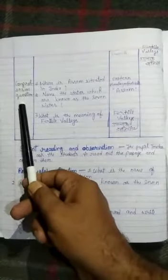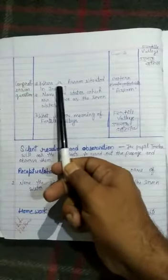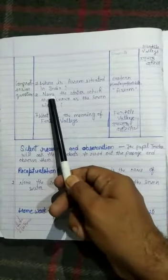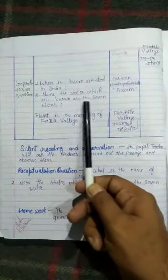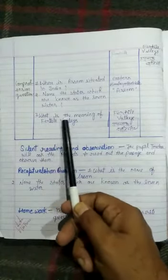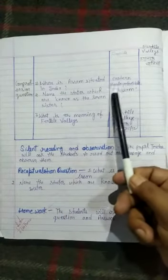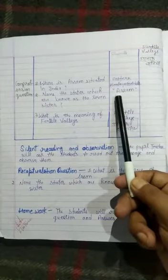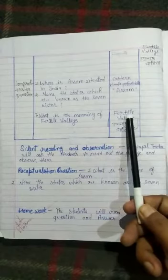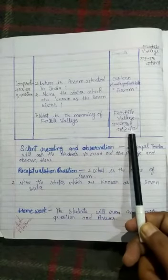Next headline, comprehension questions. There are three questions right here. First question is, where is Assam situated in India? Next to it, name the states which are known as the Seven Sisters. And third, what is the meaning of Fertile Valleys? We write here, Eastern Himalayan Foothills. Here we write Assam. And third, Fertile, its meaning is Upjau, and next Valleys, its meaning is Ghati.